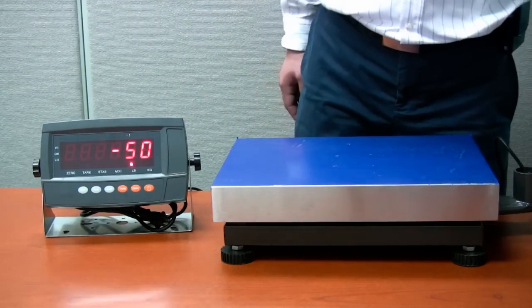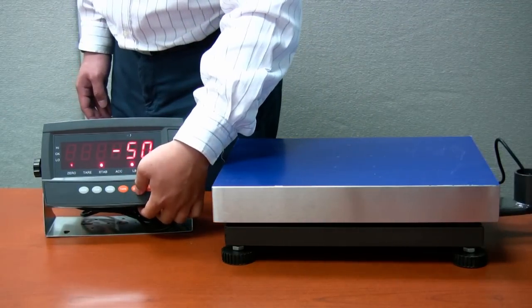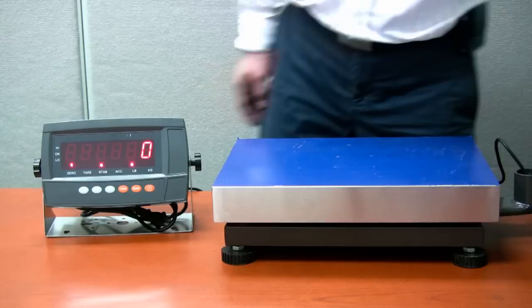The indicator will go to weighing mode and show zero. Remove the calibration weight and zero out the scale and the scale is ready to use.